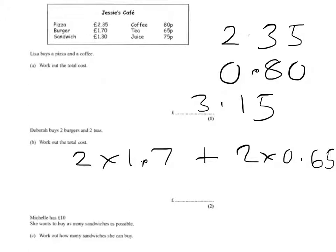So if we do that on our calculator, BODMAS will put the multiplications together first if you've got a scientific calculator. And you can enter it as you see it. You've got the correct answer of £4.70.